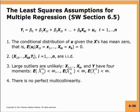The third assumption is that large outliers are unlikely. We assume all variables are bounded and do not have very small or very large values — they do not follow a fat-tail distribution. The expected value of x1 to the power of 4 and up to xk to the power of 4 are both less than infinity. The fourth assumption, new to multiple regression, is that there is no perfect multicollinearity.